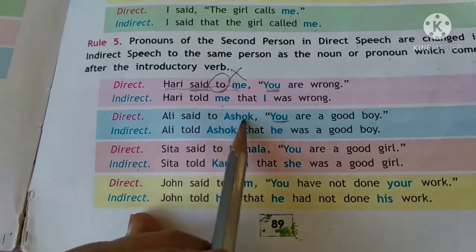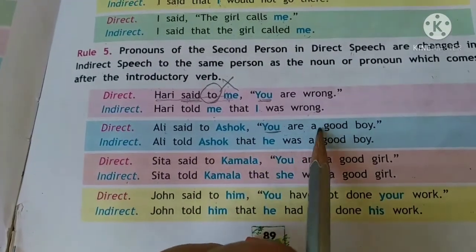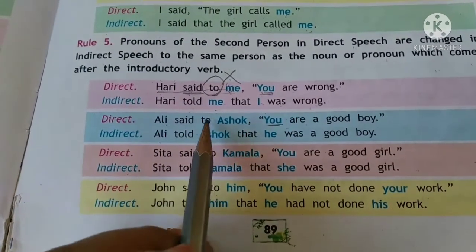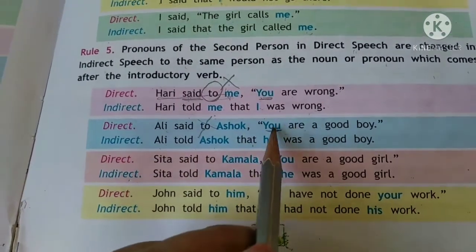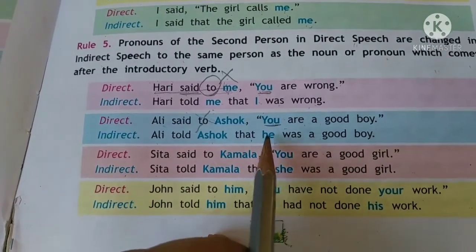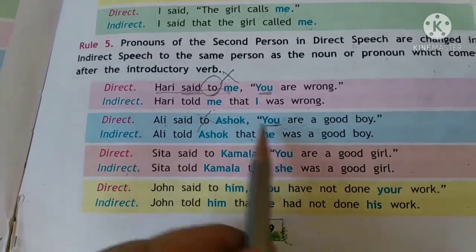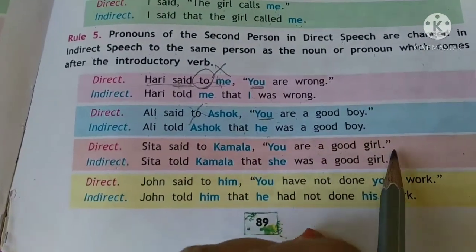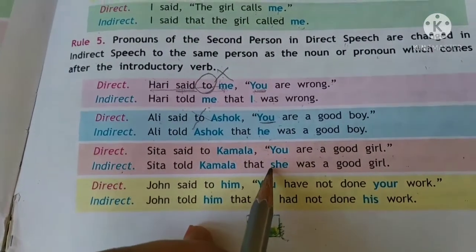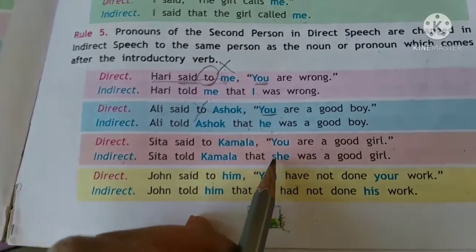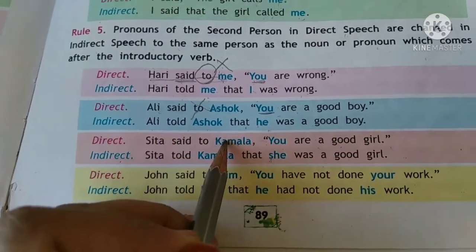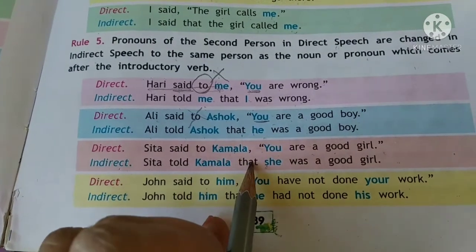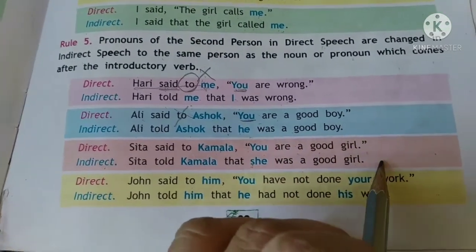Ali said to Ashok, 'You are a good boy.' This changes to: Ali told Ashok that he was a good boy — we don't write 'to', and 'you' becomes 'he' because Ashok is a boy. Sita said to Kamala, 'You are a good girl.' In indirect: Sita told Kamala that she was a good girl — 'you' becomes 'she' because it relates to Kamala, who is a girl.